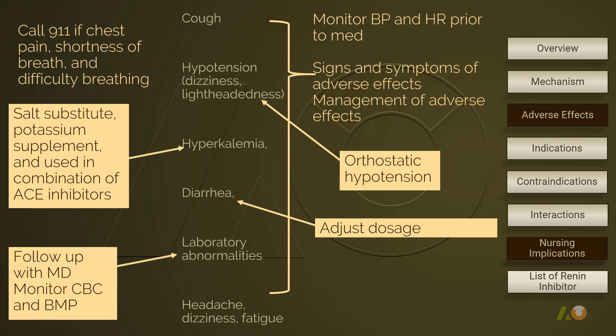Follow up with the physician on a regular basis. Some blood work, including complete blood count and basic metabolic panel, should be monitored. Alaskirin can slightly increase blood levels of BUN, creatinine, potassium, and uric acid, and it can decrease hemoglobin and hematocrit. Hyperkalemia can be a concern if the patient is using alaskirin together with salt substitute, potassium supplement, potassium-sparing diuretics, and/or ACE inhibitors. The patient should always be taught to call 911 if experiencing signs and symptoms that are anaphylactic or life-threatening.